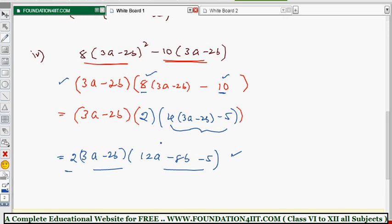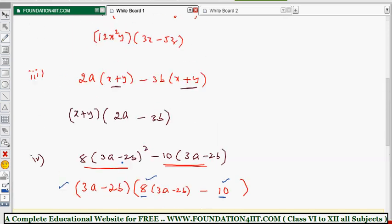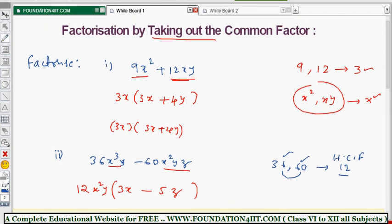So the process of writing an expression as a product of two or more expressions is factorization. The method used here is taking out the common factors. This is one method for factorization. Now we will continue with factorization by grouping — when a common factor cannot be taken directly, we group the terms and then apply the common factor method.